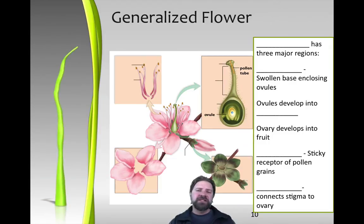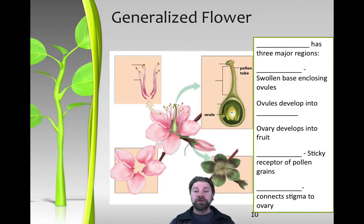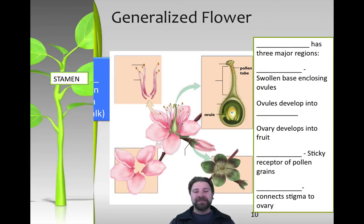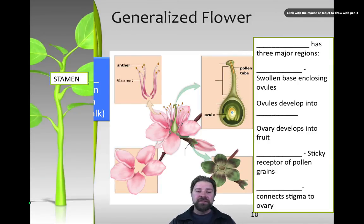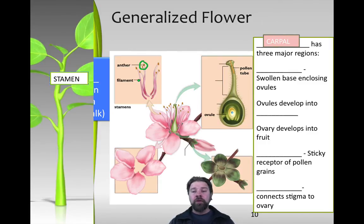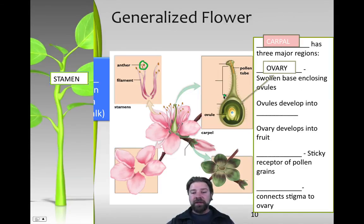Now let's look at a generalized flower structure - both the male and female parts that will produce cells for a new flower. Starting with the male parts: they consist of what we call a stamen. A stamen is a two-part structure. The first part is called the anther, visible as little nodules at the tips of tentacle-like structures called filaments. So a stamen is made from an anther and a filament. Second, we have the female portion of the flower, collectively known as the carpel. The carpel has three major parts. The first is the ovary - a big, roughly spherical shape at the base of the structure.